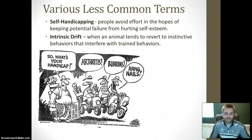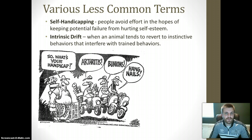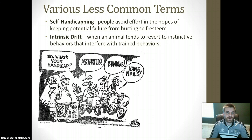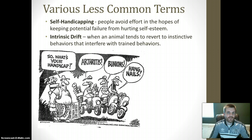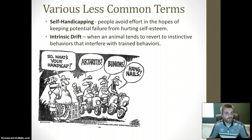Other terms are self-handicapping and instinctive drift. Self-handicapping is when you avoid effort in the hopes of keeping your potential failure from hurting your self-esteem. For example, in AP Psychology, if you are worried about how you'll do, instead of trying, you give up and never do anything. If you fail, you can say you never gave any effort, and your self-esteem is protected. With instinctive drift, animals revert back to their instinctive or more natural behaviors, which can interfere with behaviors they have been trained to do. Even if you train a dog to do a cute trick, over time they may revert back to their species-specific behaviors.